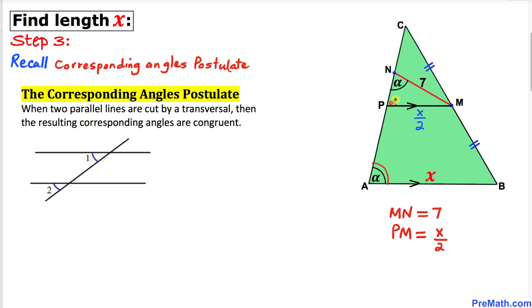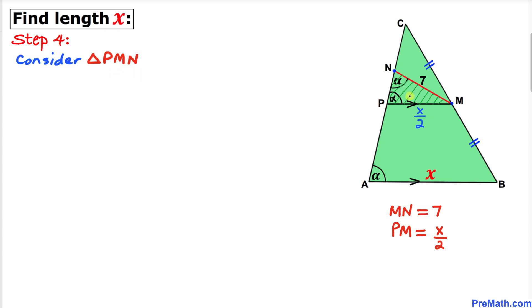Here's our final step. Let's focus on this triangle PMN. Now we can see in this triangle, this angle is alpha and this angle is alpha as well.